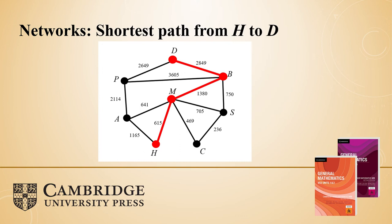Some of the problems that come up in the networks topic include identifying the shortest path. There is an algorithm — Dijkstra's algorithm — that can be used to identify the shortest path. However, with a small diagram, it can be done by inspection as well. In both the one and two book and the three and four book, we have updated Dijkstra's algorithm as a much more straightforward and almost visual method of approaching this, being able to identify the shortest path without using the traditional table.